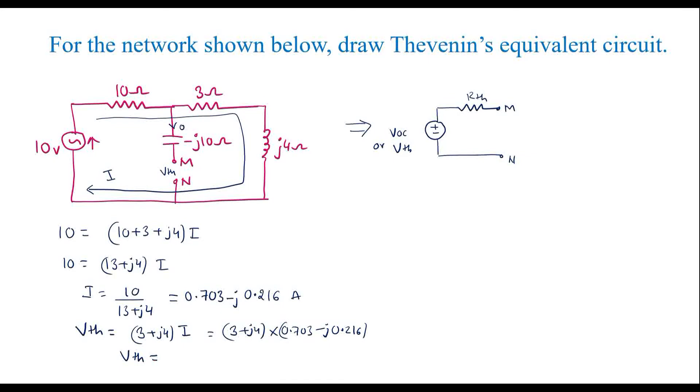we will get VTH is equal to 2.973 plus J2.164, that is in rectangular form.